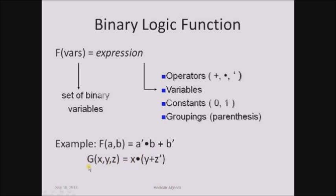Taking one more example: g of x, y, z equals x dot of y plus z complement, where x, y and z on the left hand side are the binary input variables. On the right hand side, it is an expression which involves dot, plus and complement operators along with variables and parentheses. This is how we represent the relationship between the input variables and the output of a function.